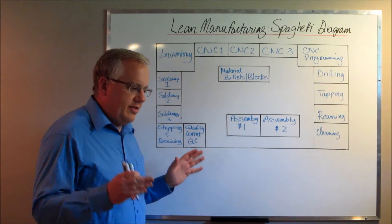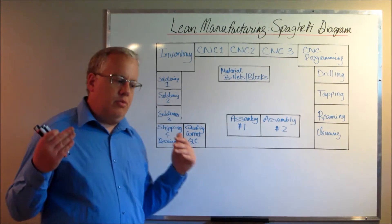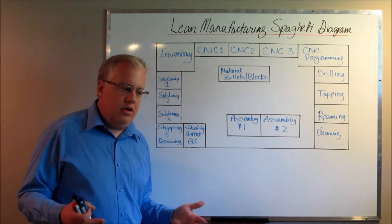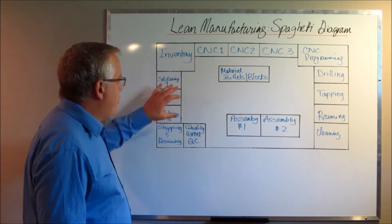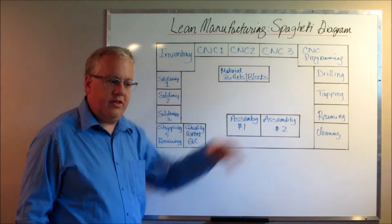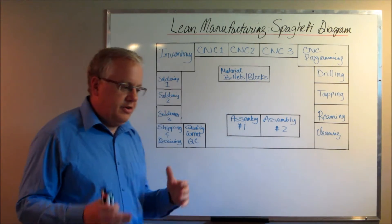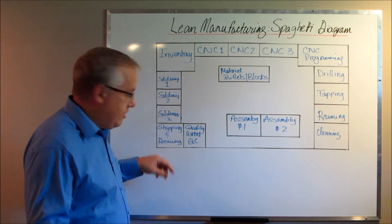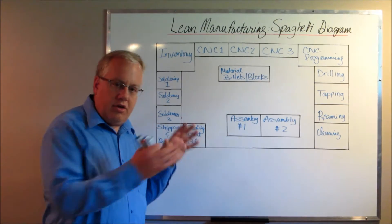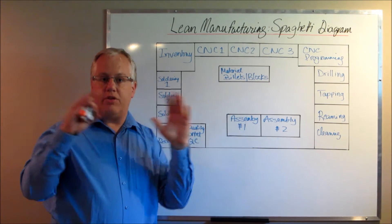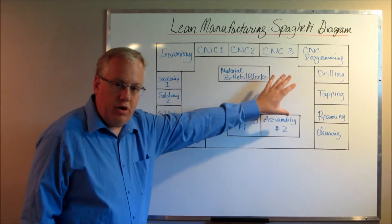Every single operation involved in manufacturing has a cycle time. Manufacturers know that if you reduce the cycle time in every operation, you're going to increase your production throughput because you're becoming more efficient. The transit times between each workstation also play a role in the overall cycle time for the finished part — both the cycle time for individual operations and the total cycle time for the entire finished good.